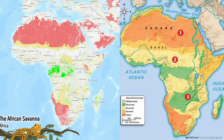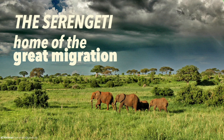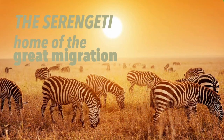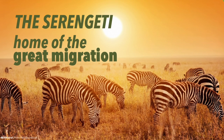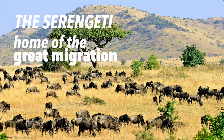Up next, we have the African savanna, which is the largest in the world. The most famous within it is the Serengeti in Tanzania, called the home of the Great Migration, as it is the only place in Africa where vast land animal migrations still take place. Each year, more than 1 million wildebeest travel in a circular migration across the Serengeti. It is home to one of the continent's highest concentrations of large mammal species, including lions, hyenas, zebras, giraffes, and elephants.